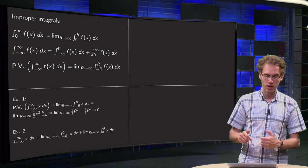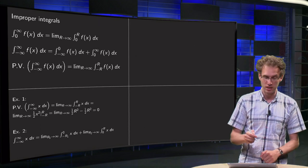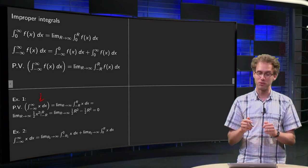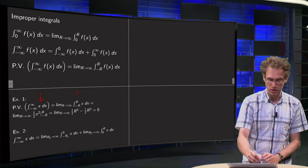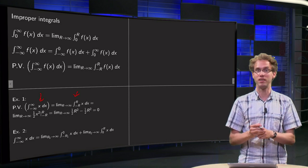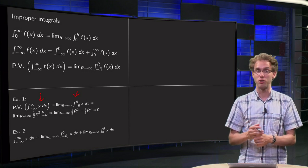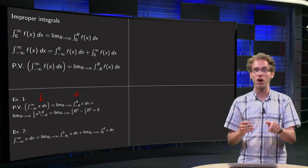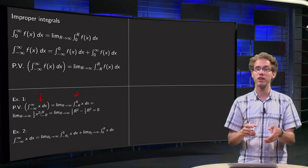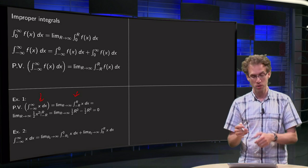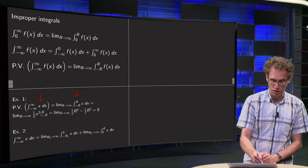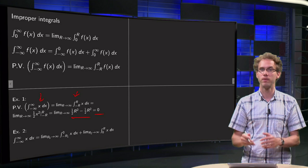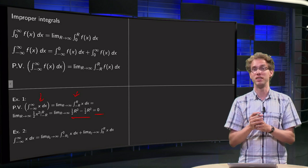What is the consequence of this? For example, if you compute the principal value of the integral of the function x: you integrate from minus r to r and then take the limit as r goes to infinity. Integrating x from minus r to r gives the antiderivative one half x squared; plugging in r gives one half r², and plugging in minus r also gives one half r², so we get zero. Taking the limit as r goes to infinity, we still get zero. So the principal value of this integral equals zero.